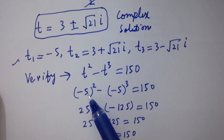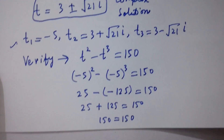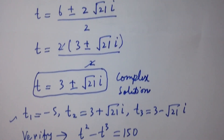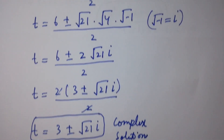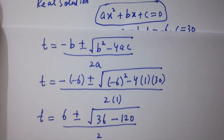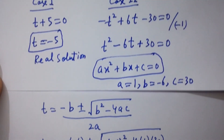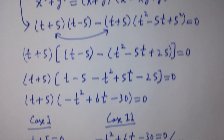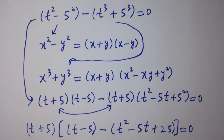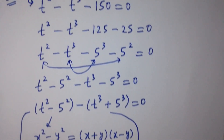This shows that the values t1, t2, and t3 satisfy the equation t squared minus t cubed equals 150. Thanks for watching this video. Please subscribe to this channel to get notifications of my new videos, and don't forget to share this video with your classmates and friends so that they also benefit from it. You can also visit the playlist of this channel to learn more.